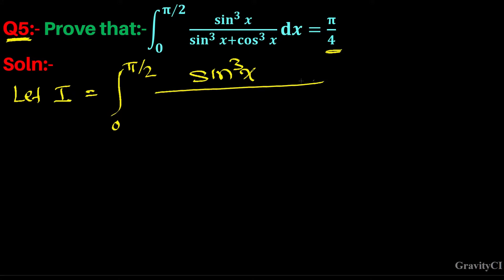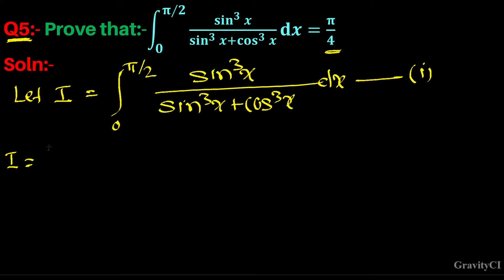We will solve this using definite integral properties. I equals integral 0 to π/2 of sin³(π/2 - x) upon sin³(π/2 - x) plus cos³(π/2 - x) dx.